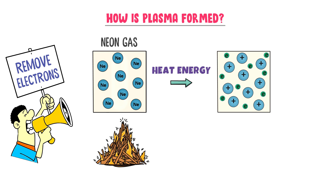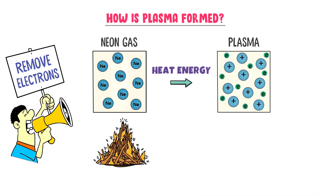As a result of this, the neon atoms become positive ions, because they have lost one or more electrons. This ionized gaseous state of matter is called plasma.